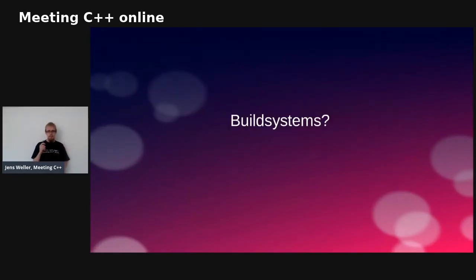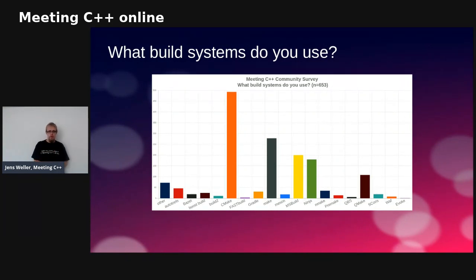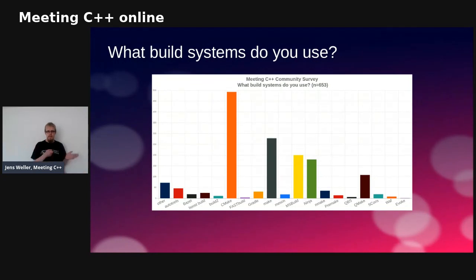I asked several questions about build systems, but I chose this one for the starting talk. It's a multiple choice question and you see that CMake is very popular, though there are a few others. A single choice question asking which is the primary build system is basically CMake — there are not many people picking anything else. So CMake is really the dominating build system in C++ right now.